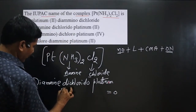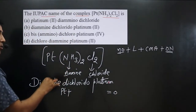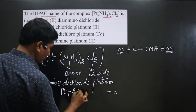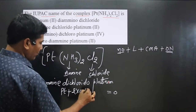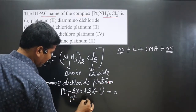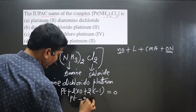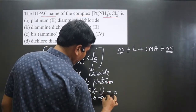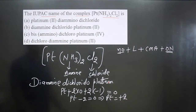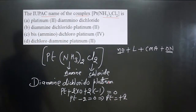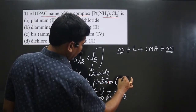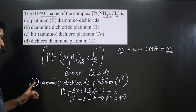Now we calculate the oxidation number. Since it is a neutral complex, the overall charge equals zero. Ammonia is a neutral ligand, so its contribution is zero. Each halogen (chloride) has an oxidation number of −1, and there are two of them, giving −2. So platinum's oxidation number is +2, written in Roman numerals as (II).